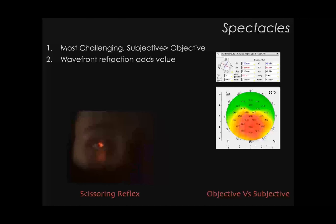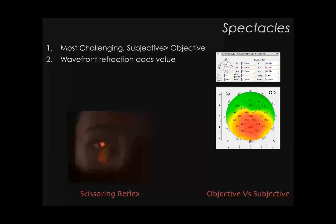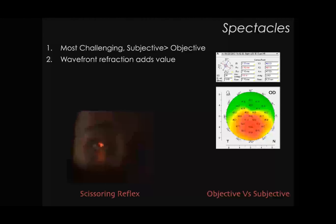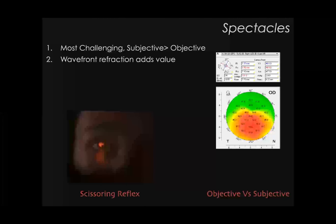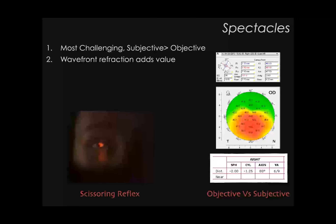Keratoconus is the toughest case for any optometrist to refract because of the scissoring reflex — they are unable to neutralize the axis and power. Good understanding of corneal topography and trying to neutralize despite the scissoring is key, and ultimately subjective acceptance is most important. In our practice, subjective acceptance is given more value than objective findings, as what is seen on scans does not always match what the patient accepts due to higher-order aberrations. A wavefront-assisted diffraction device like the Nidek OPD-3 scan can be of great value.